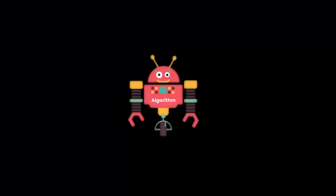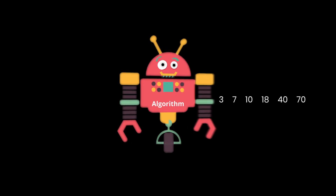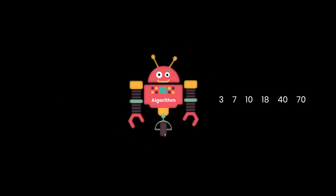An algorithm may be correct and it may also be incorrect. The algorithm is said to be correct if it produces the desired output on every input instance — in this case, if we give any set of numbers, they will be sorted correctly. If it produces an undesired output on any input instance, it is said to be an incorrect algorithm.